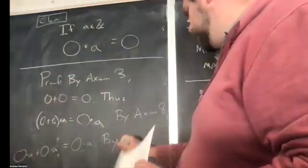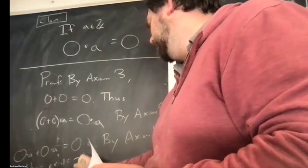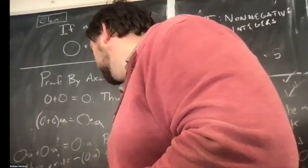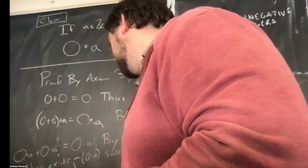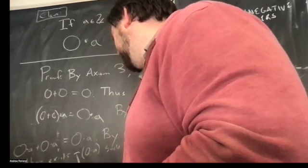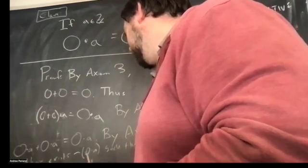So by axiom 4, there exists the opposite of 0 times A, such that 0 times A plus the opposite of 0 times A will equal 0, right?